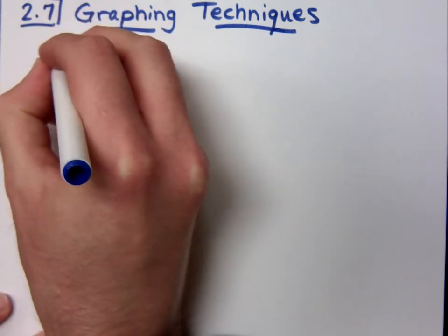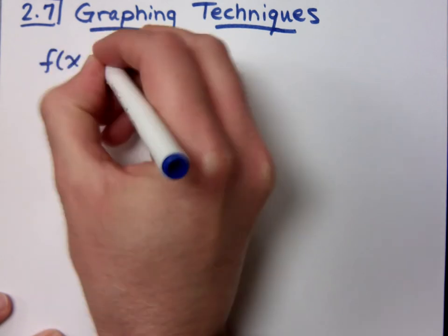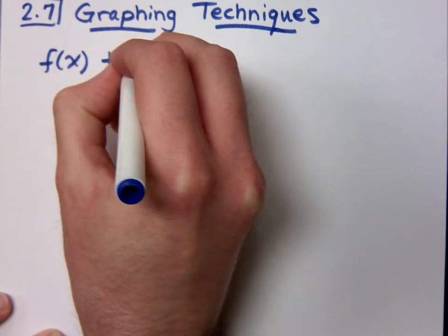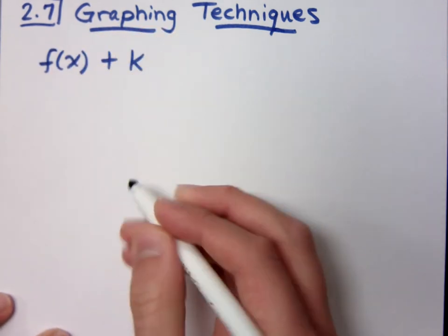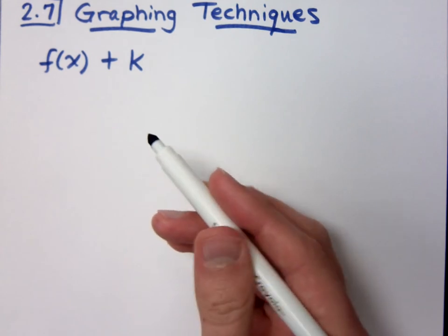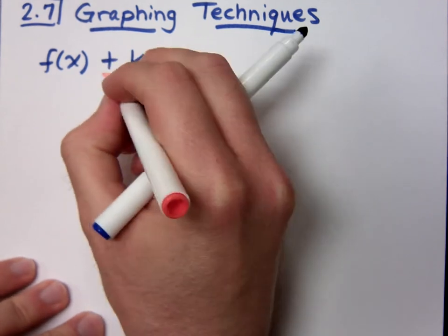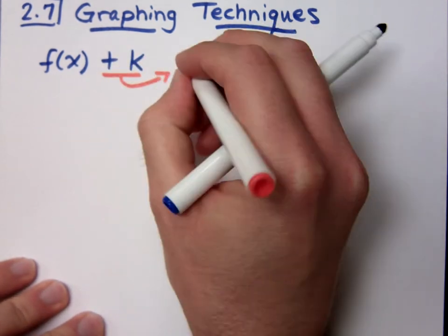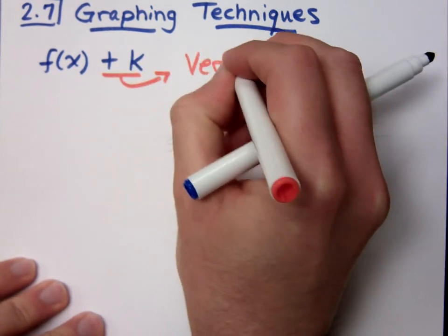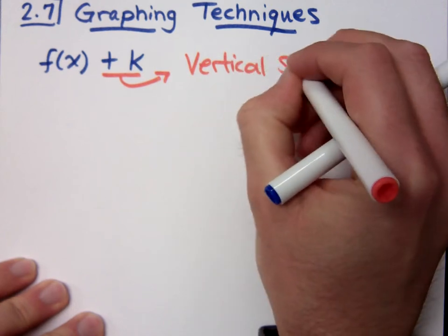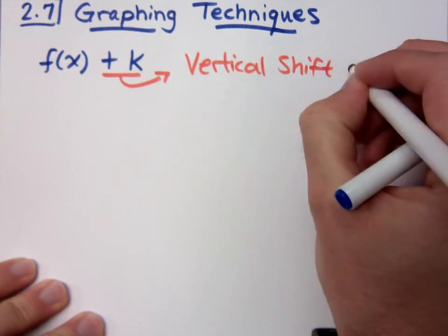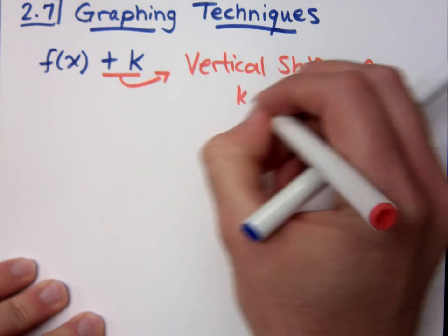This is one of the first things that we ever saw whenever we were translating these guys. If you have your function and you see a plus k on the outside here, well this plus k corresponds to a vertical shift. This corresponds to a vertical shift of k units.